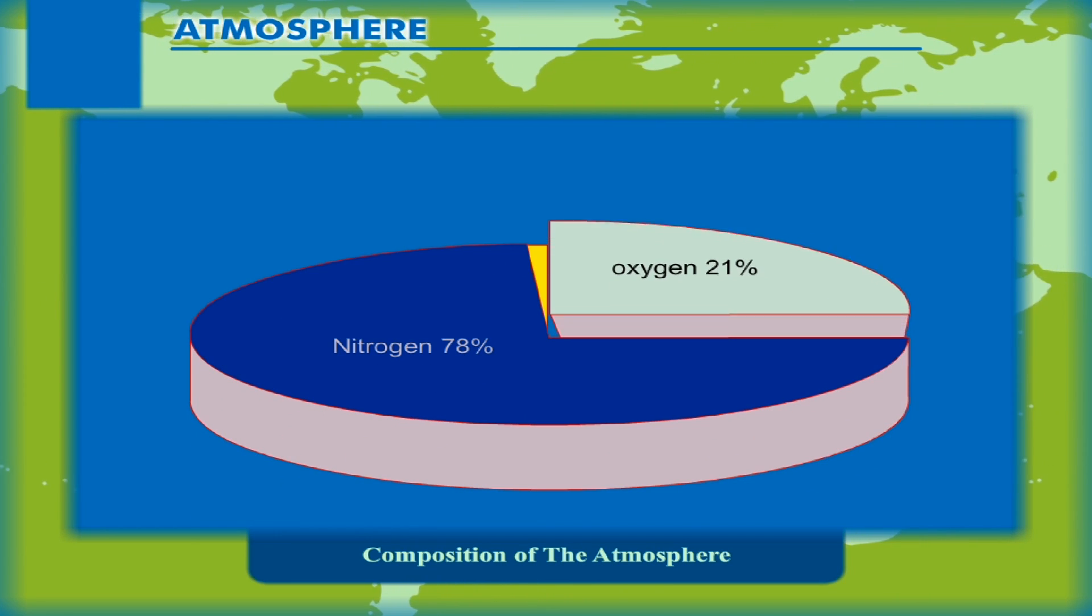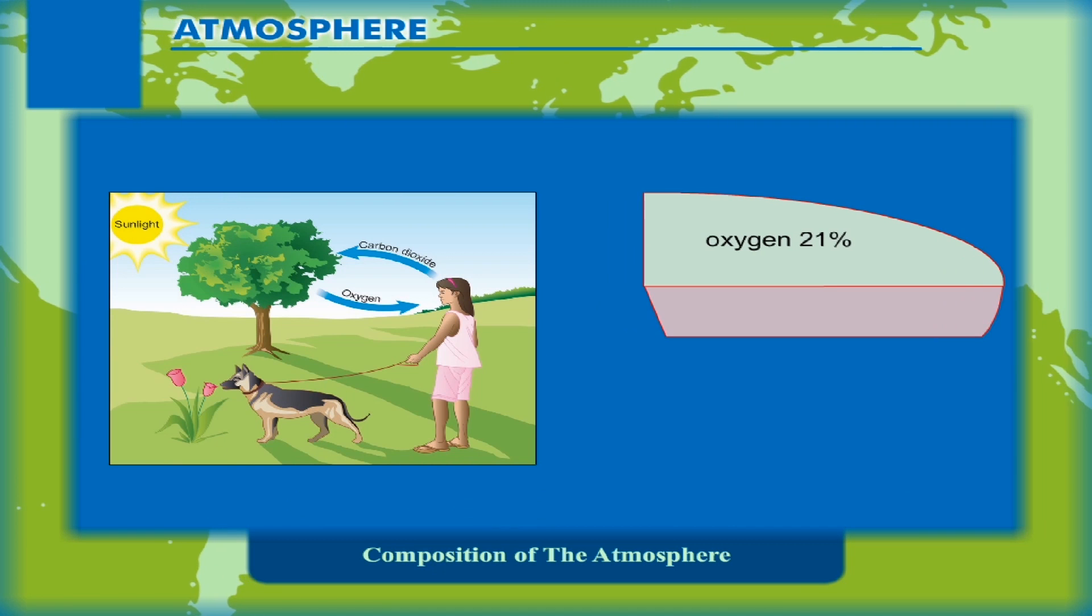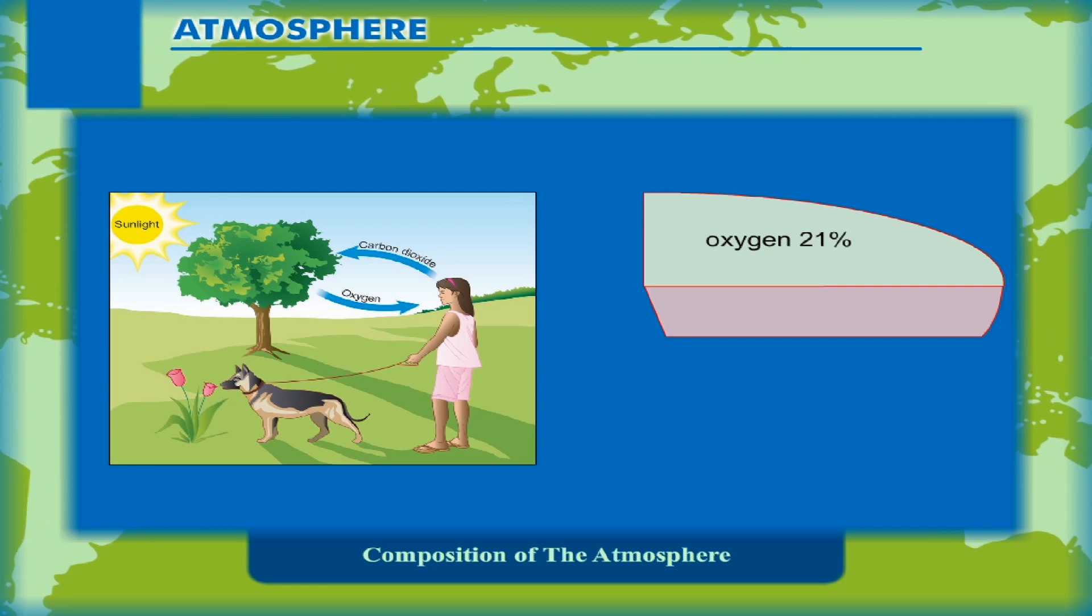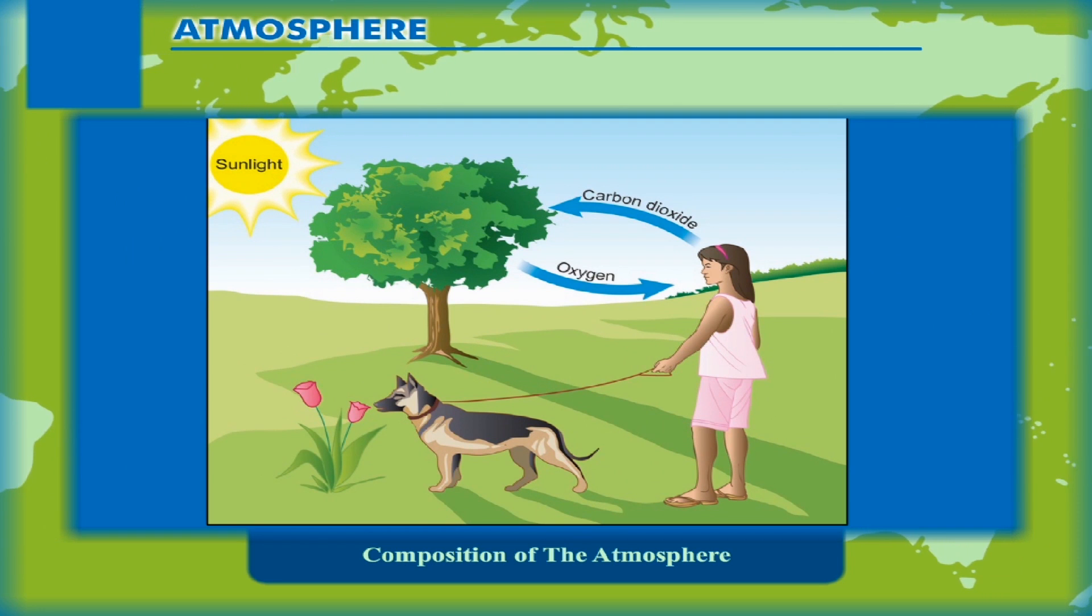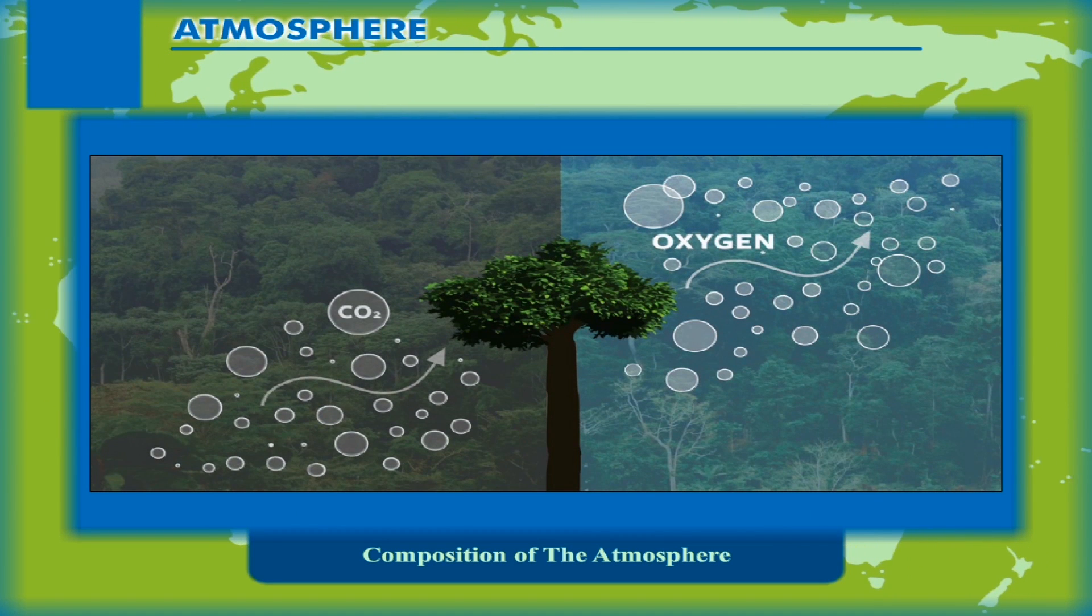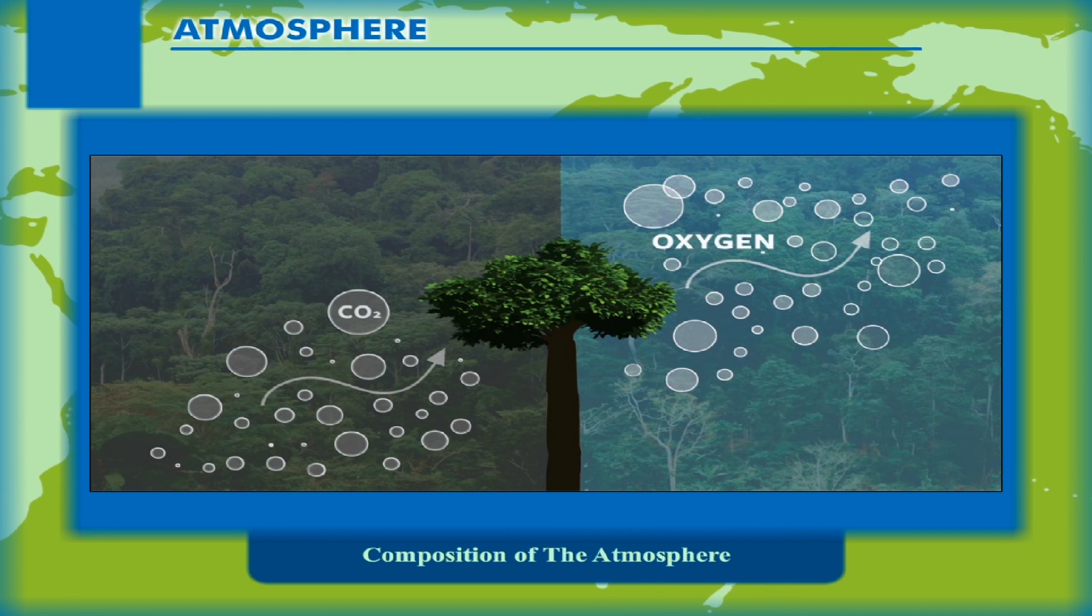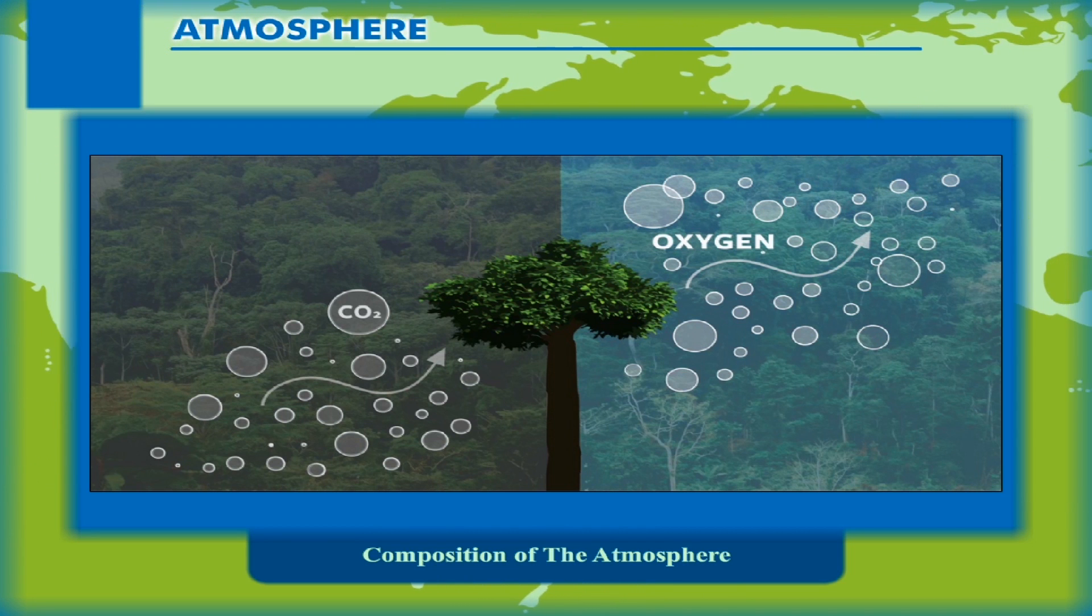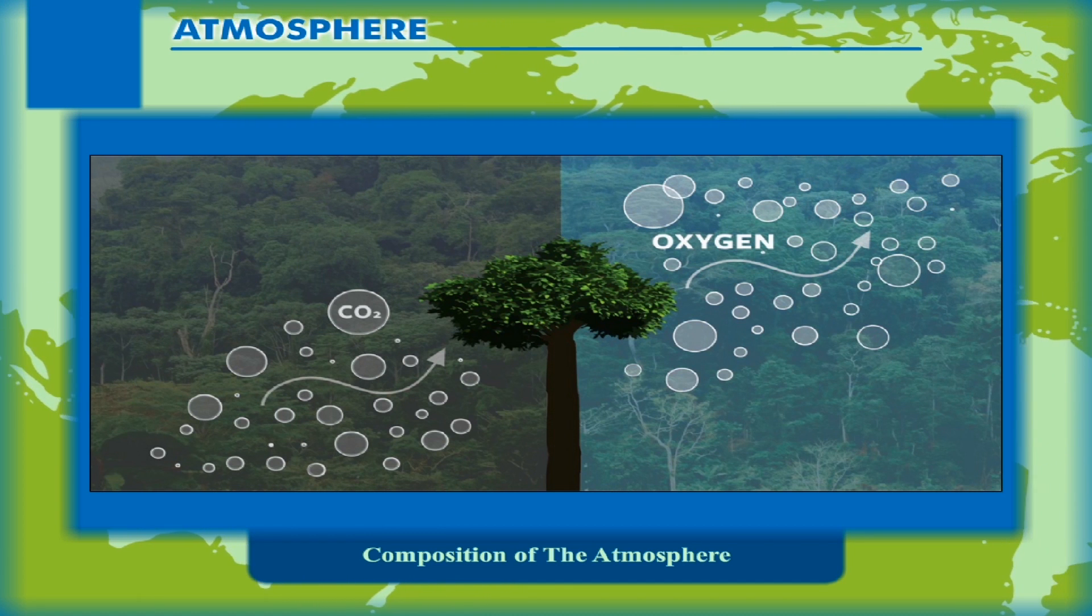Oxygen ranks as the second most plentiful gas in the atmosphere. It is essential for the survival of plants and animals. Living beings need this oxygen to breathe and stay alive. Green plants produce oxygen during the process of photosynthesis. Carbon dioxide is used up by green plants for making food. So, the carbon dioxide used up during photosynthesis is replaced by the carbon dioxide released in respiration by organisms. Thus, nature has ways of maintaining a balance of gases in atmosphere.